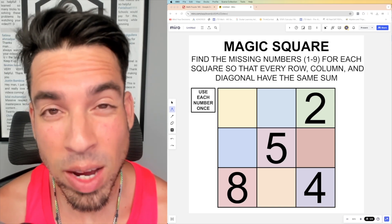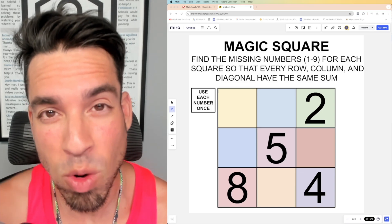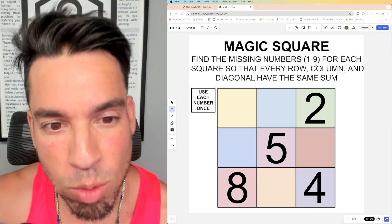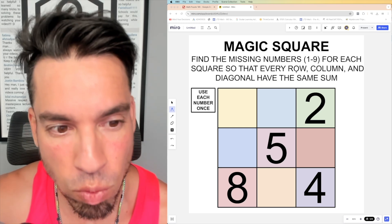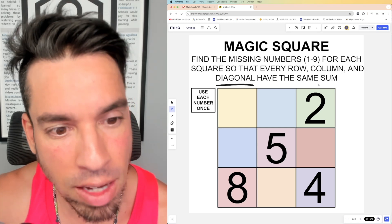What's up everybody and welcome back to another math puzzle. In this one, the question is as follows: find the missing numbers one through nine for each square so that every row, column, and diagonal have the same sum.